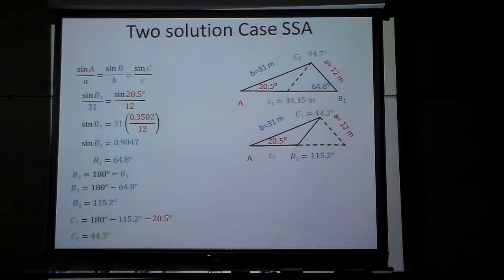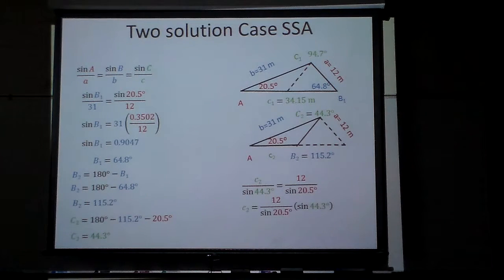And now all I've got to do is go find, I can find side C2 by doing this right here. That 12 over sine of 20.5 equals C2 over that. Plug in the numbers and you get 23.93. All right?